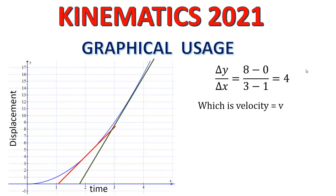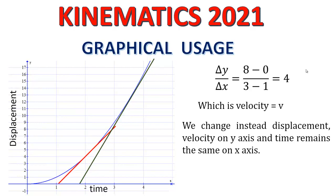I have shown one more graph — the green line. The angle of the green line is greater than the angle of the red line, where angle is always measured from the positive x-axis. Now if instead of displacement we put velocity on the y-axis and keep time on the x-axis, we get a velocity versus time graph, and in that case the slope is going to be acceleration, because velocity divided by time is acceleration.